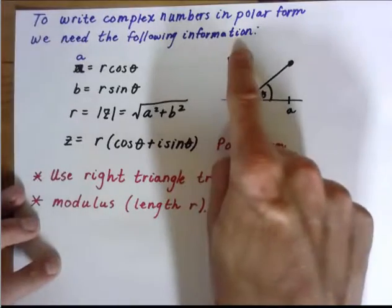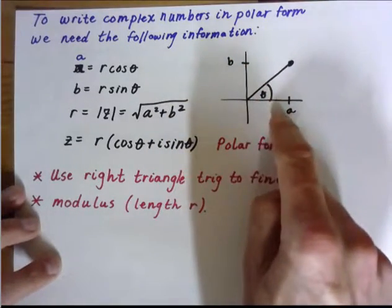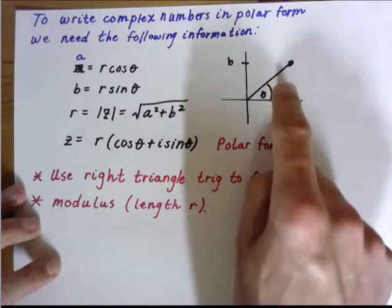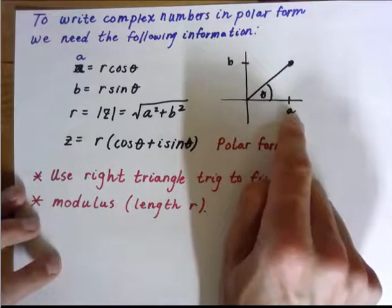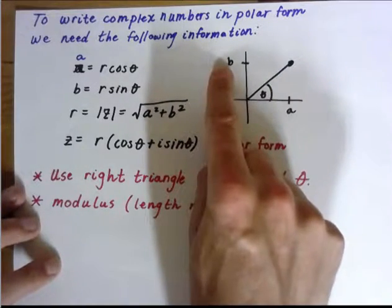We also have to think about A plus BI. Remember, here's the complex plane here, so we go A over and B units up. You can also consider that A being your X value, B being your Y value.